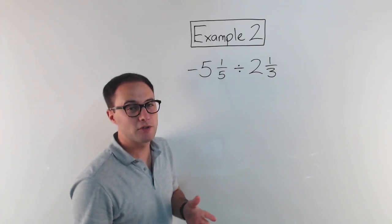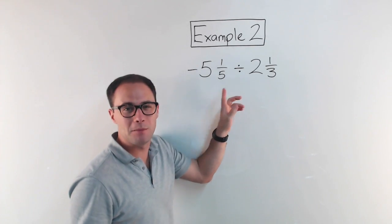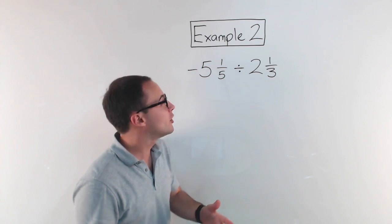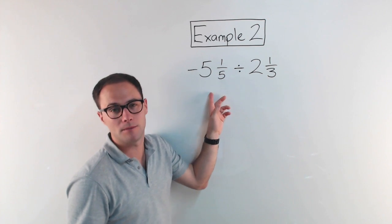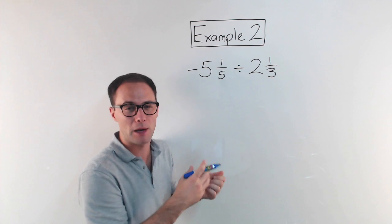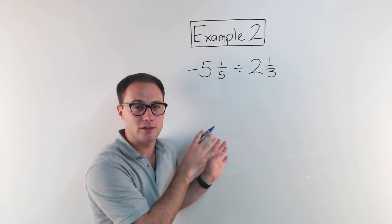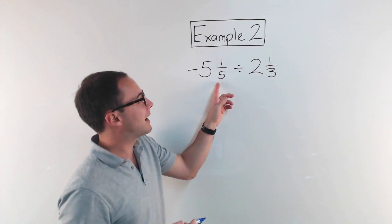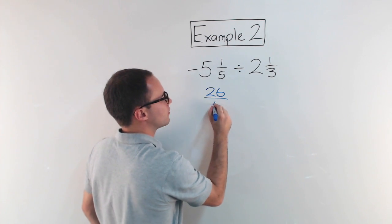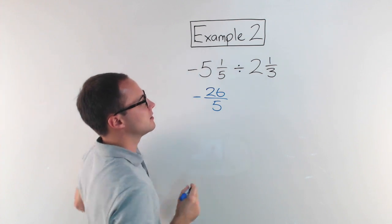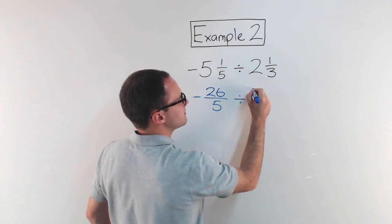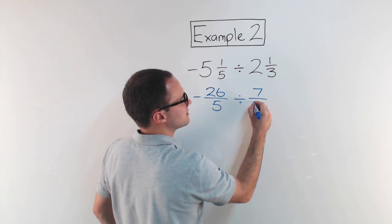Let's do example two. Now we are dividing mixed numbers — the only difference is that this is a negative mixed number, but we approach it the same way. First, we change them both to improper fractions. Five times five is twenty-five, plus one is twenty-six, so that is negative twenty-six over five. Then three times two is six, plus one is seven, and the denominator stays the same: that's three.